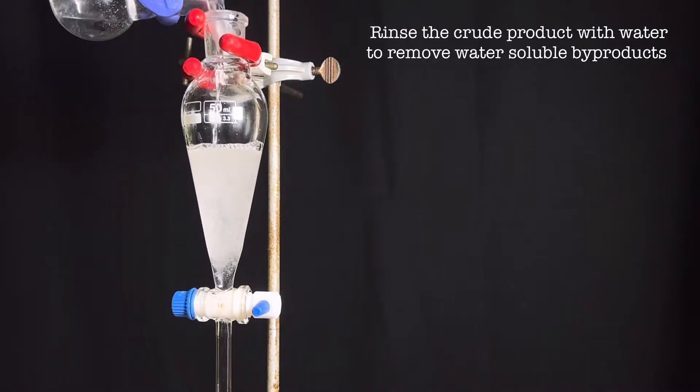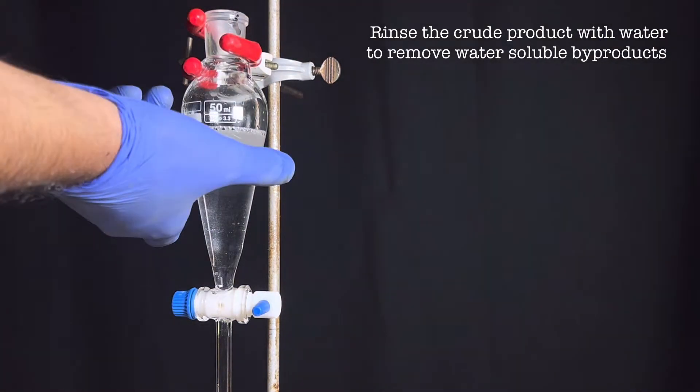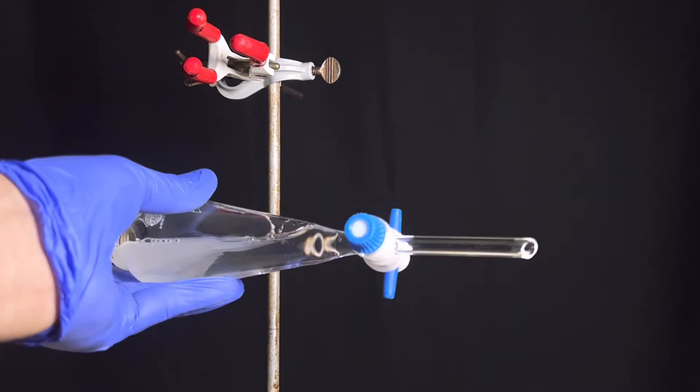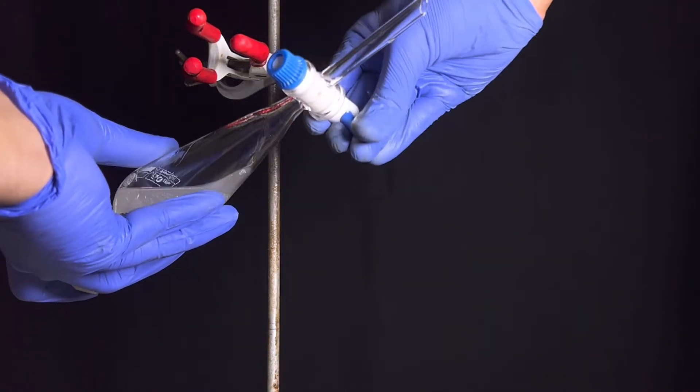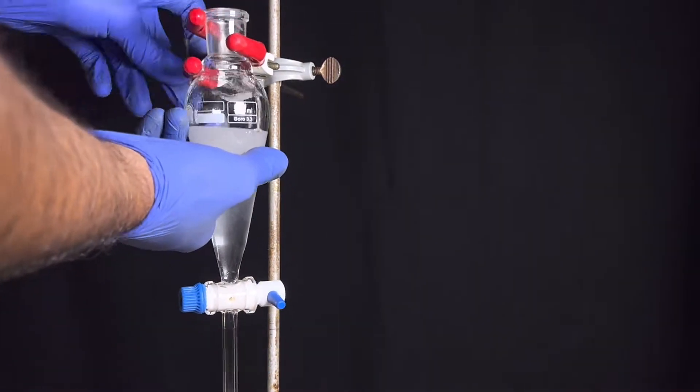Now the product is washed with some distilled water to remove any water-soluble impurities if present. The separatory funnel was capped, shaken and vented to thoroughly rinse the product. Then the lower aqueous layer was discarded.